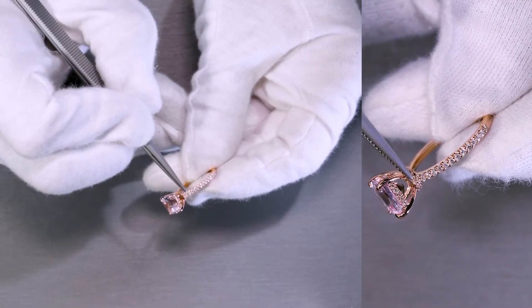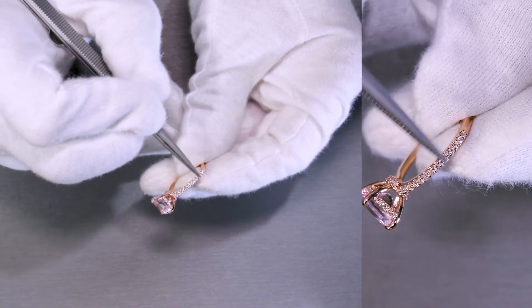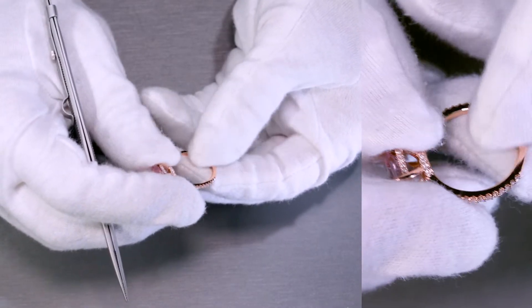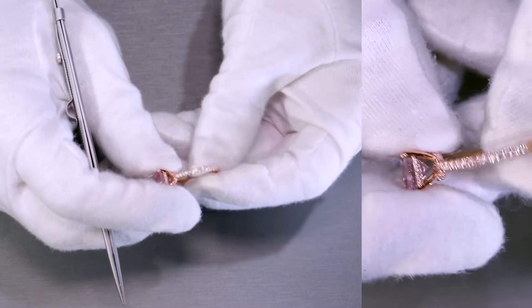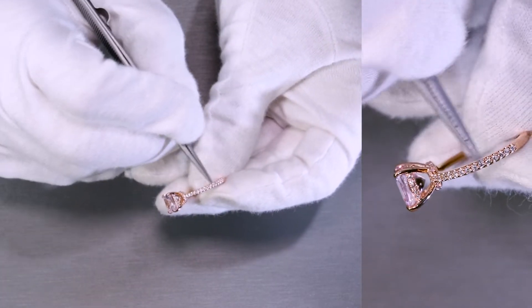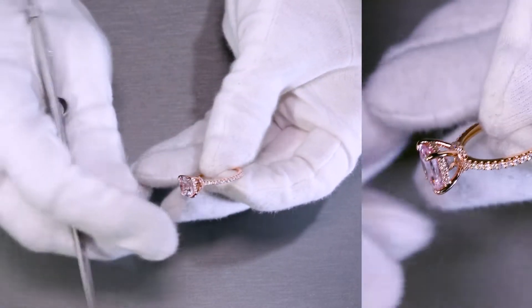That goes all the way down as a three quarters, a partial between a three quarters to a half eternity. And these are all natural diamonds along the shank. It's absolutely stunning.